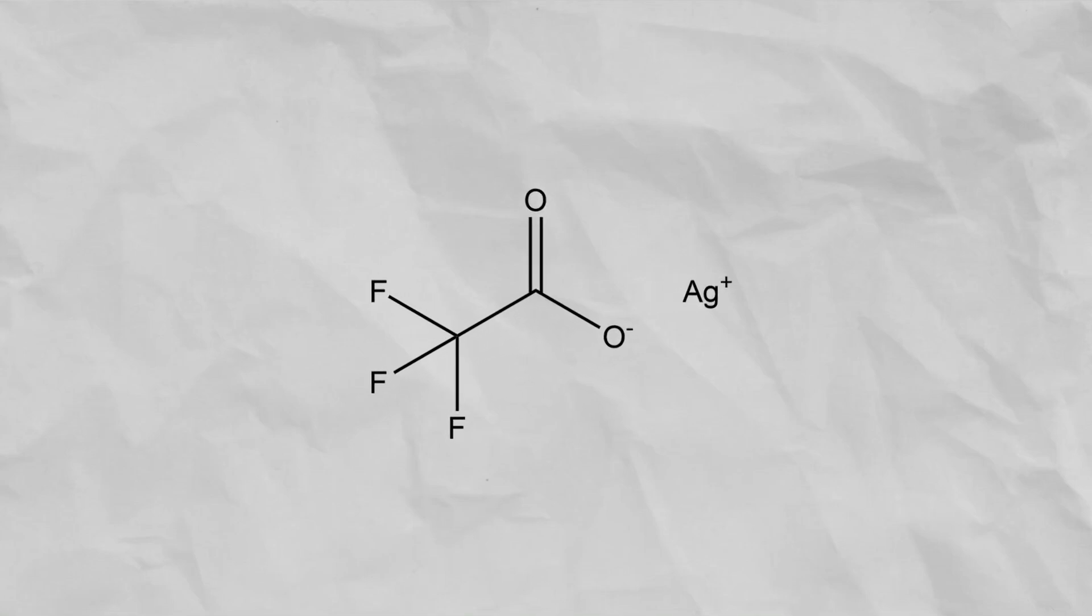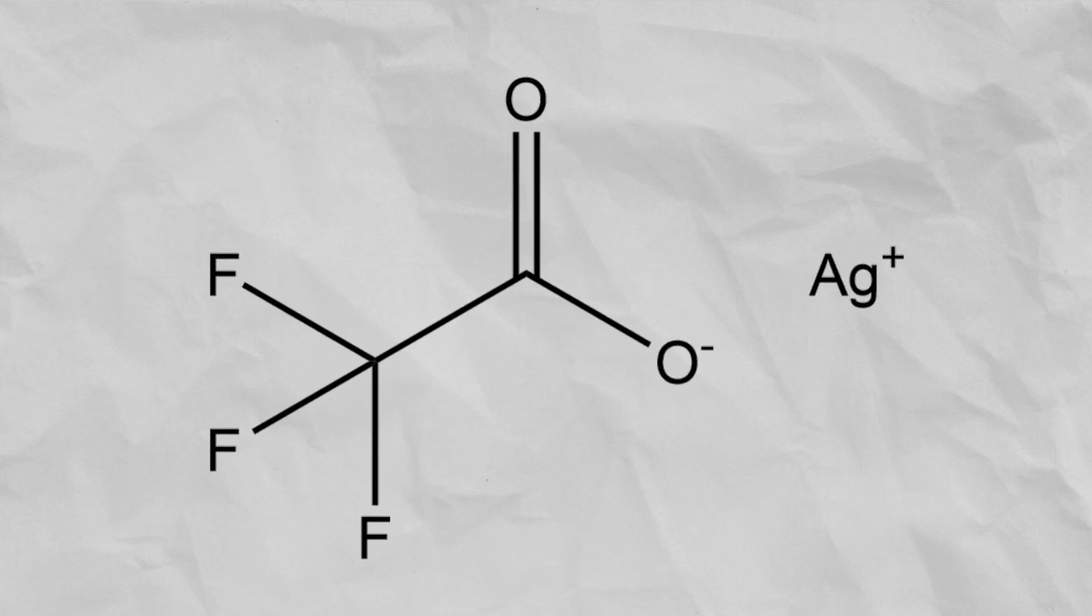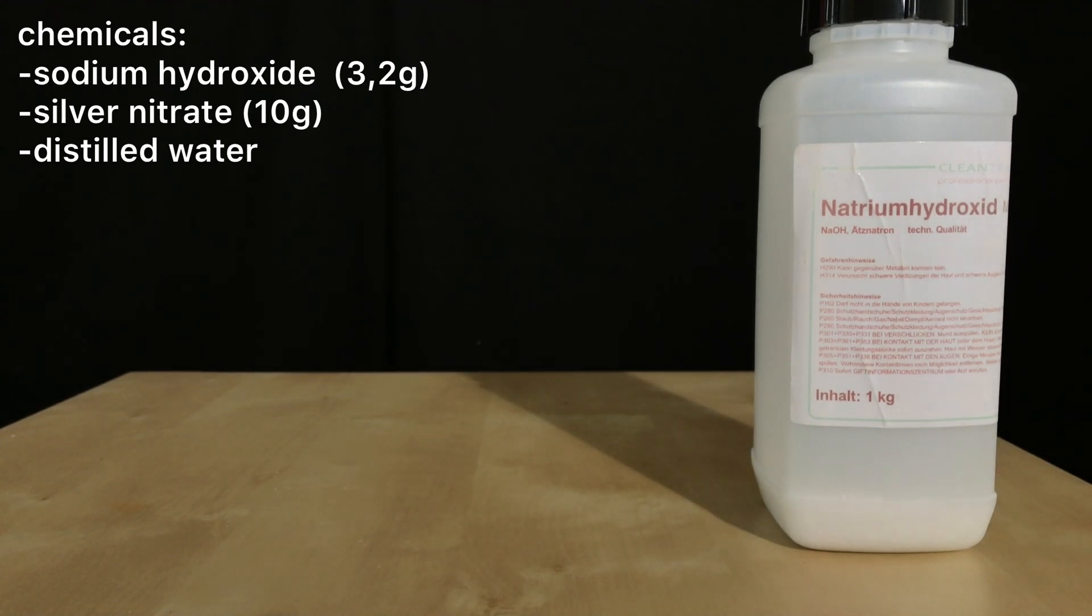Welcome everybody, today we are going to make silver(I) oxide, which we are going to use to make a chemical called silver trifluoroacetate. Why do we need silver trifluoroacetate? Well, I'm not going to reveal it now, but it's for an interesting project.